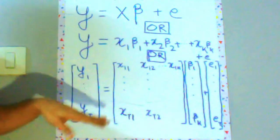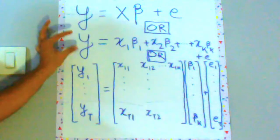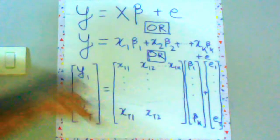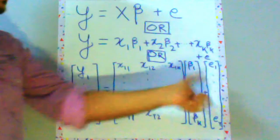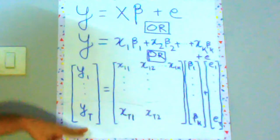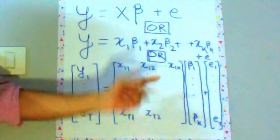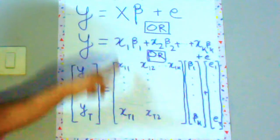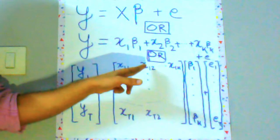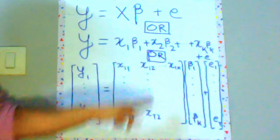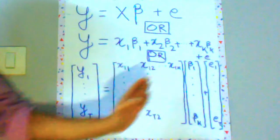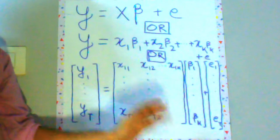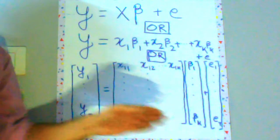Or you can write this in the complete matrix form. This over here is not the complete matrix form but this is the complete matrix form y1 to yt. So you have t observations and this over here is the first column which is all full of one. The second column will be your first predictor, third column will be your second predictor and so on.